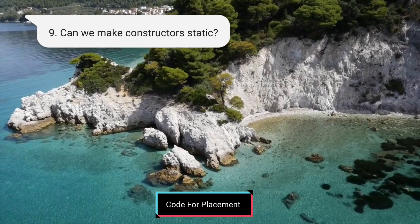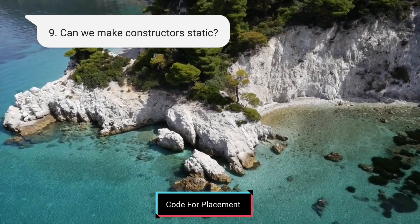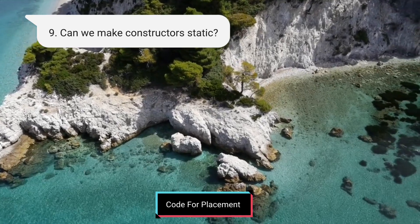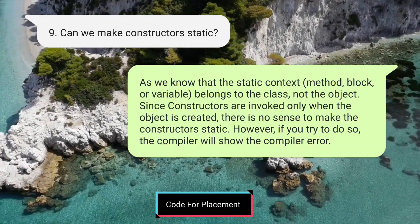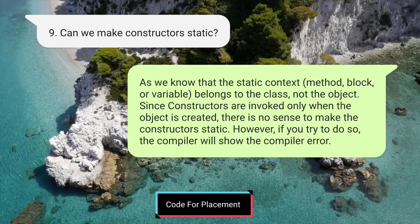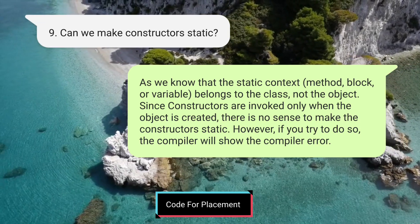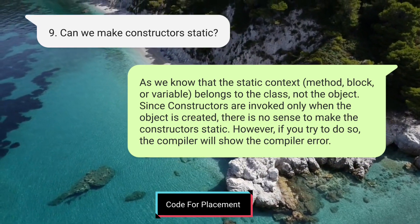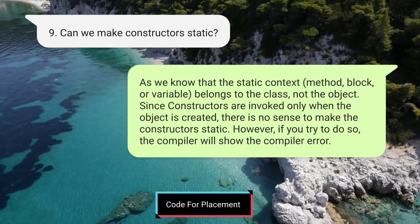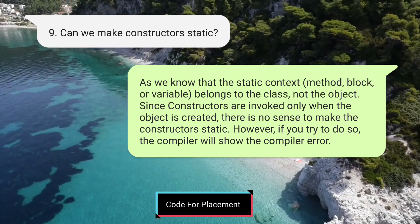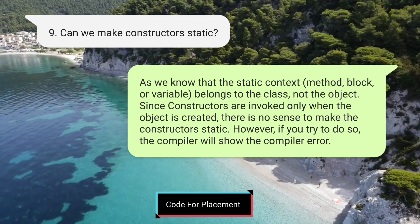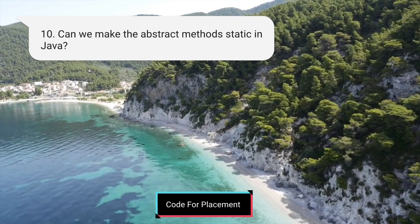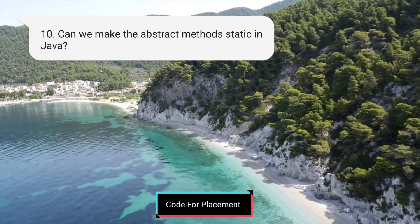The ninth question is: can we make a constructor static? As we know, the static context — method, block, or variable — belongs to the class, not to an object. Since constructors are invoked only when an object is created, there is no sense in making a constructor static, because we cannot call it independently. Therefore, constructors cannot be made static.